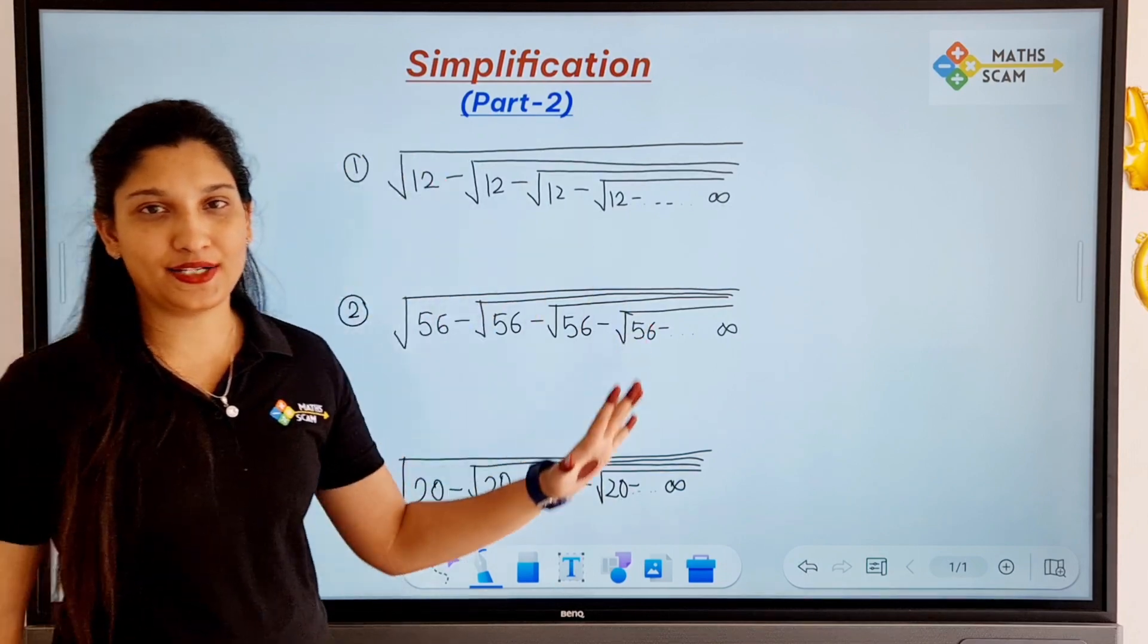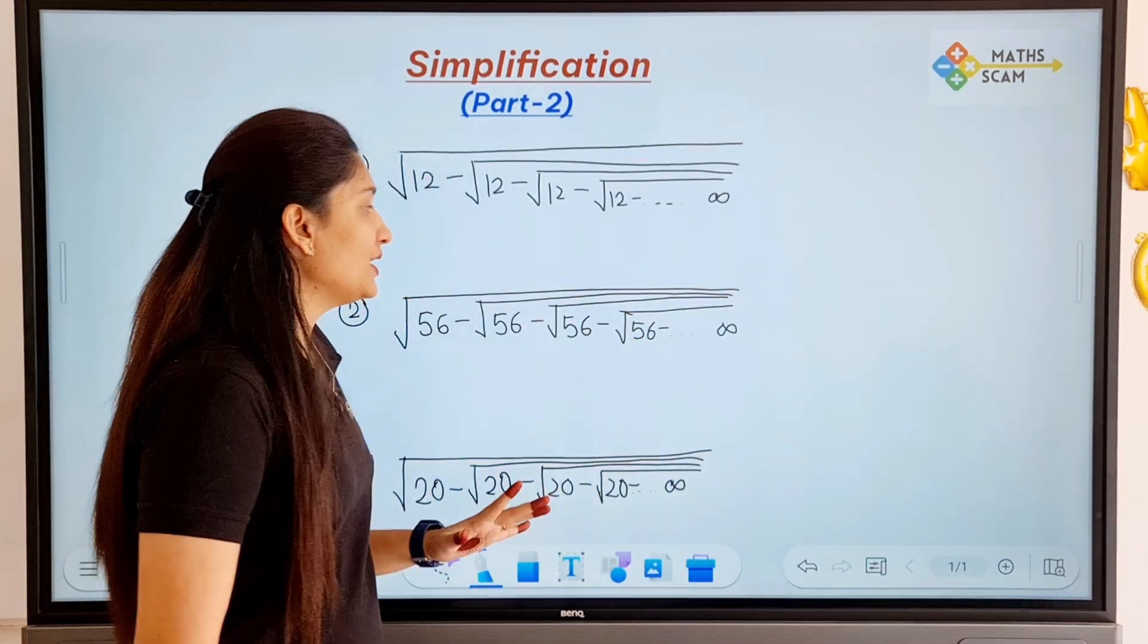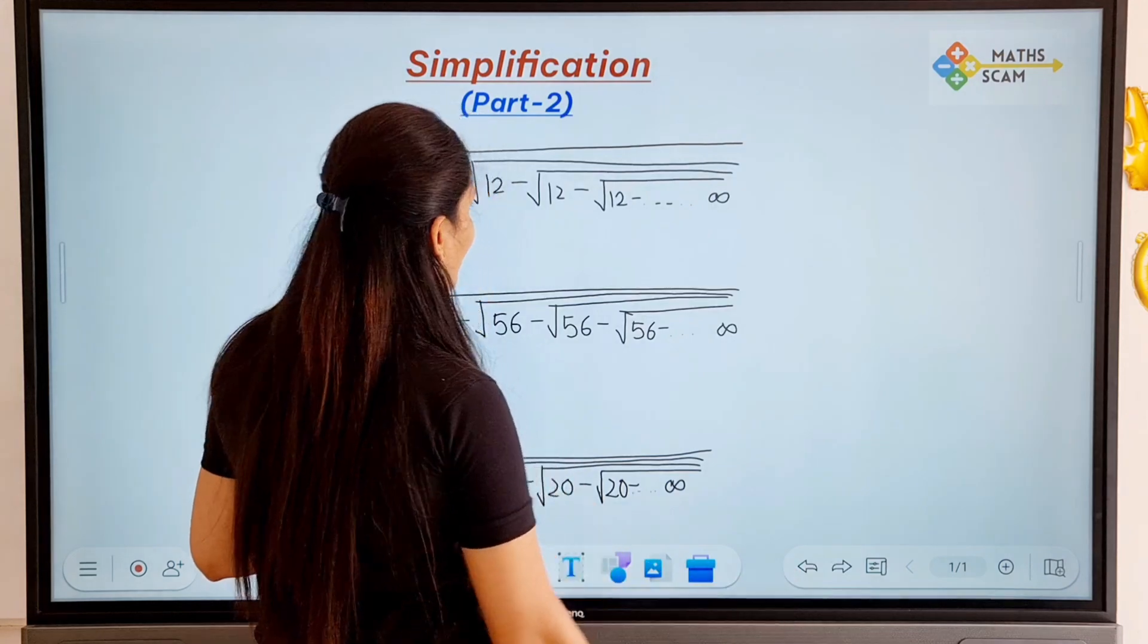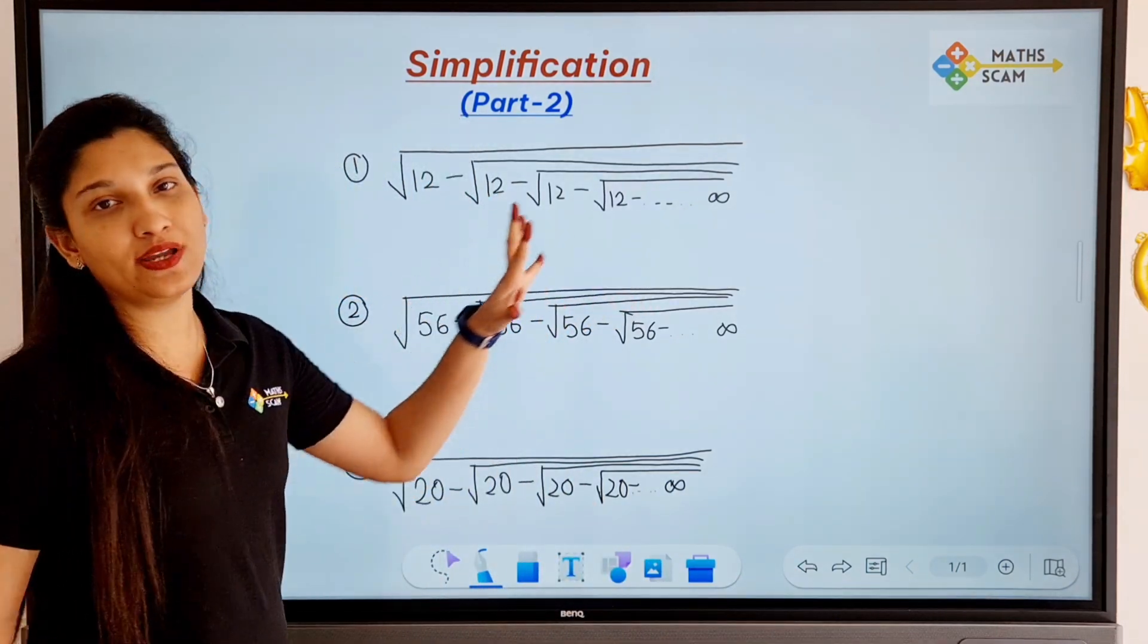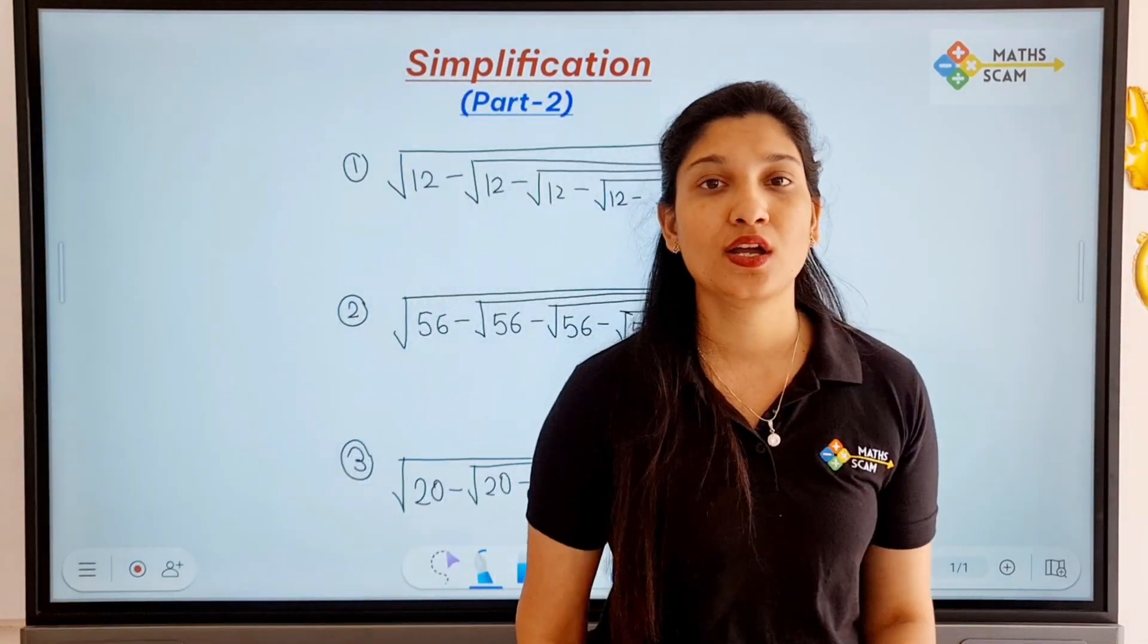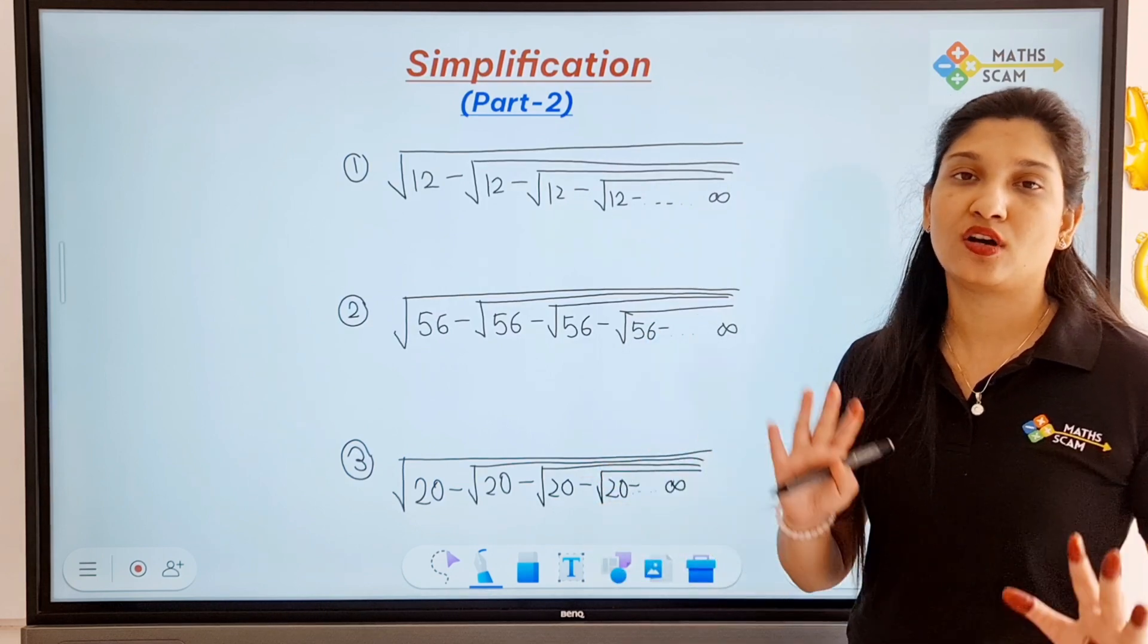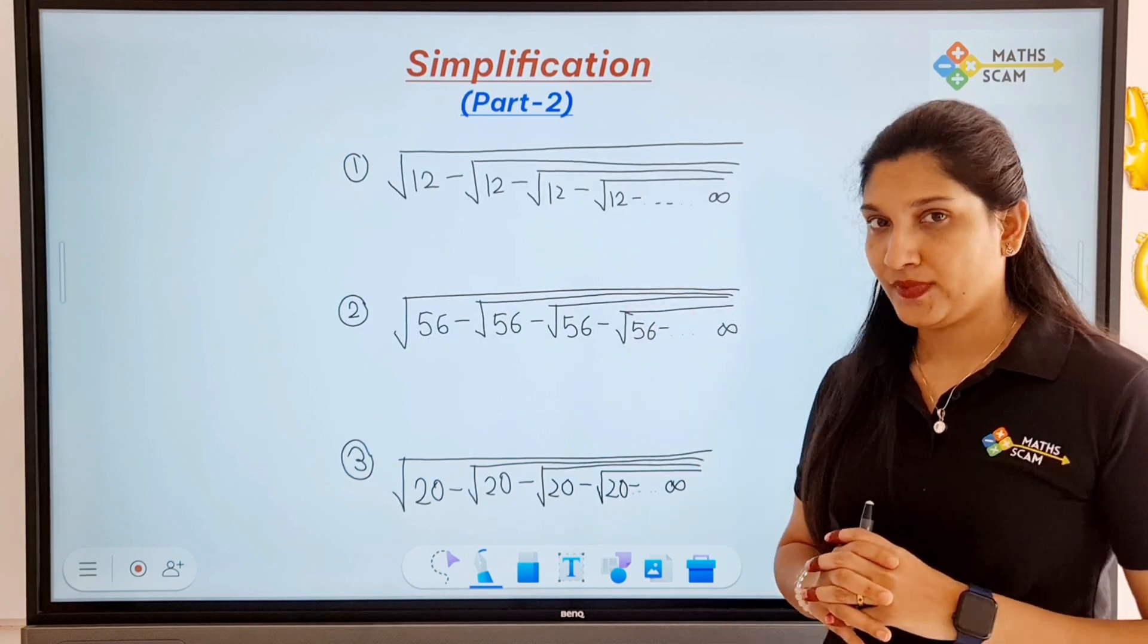So, the Simplification Part 2. In the previous part there was the same questions, but the sign between them was plus, right? But here, all the questions you can see are in square roots up to infinity—square root in square root, square root in square root. All the questions here are of negative subtraction.